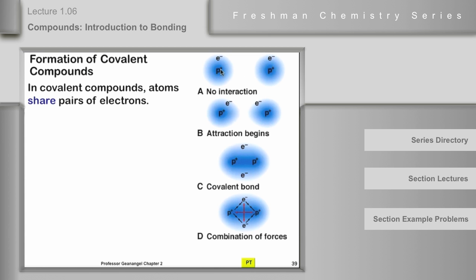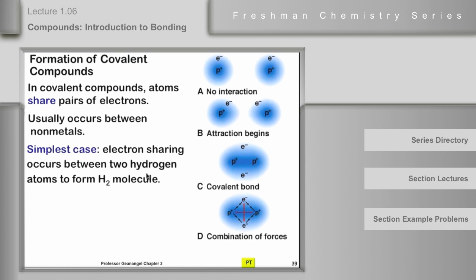In the simplest case for H2 we would have two hydrogen atoms, one proton and one electron in each one, no interaction. As they get closer together the electrons for one atom become attracted to the protons of the other and we eventually reach a spot where there are one, two, three, four coulombic attractions and one, two repulsions so there's a combination of forces that holds a covalent bond together. This usually occurs between nonmetals and the simplest case would be for two hydrogen atoms forming an H2 molecule.